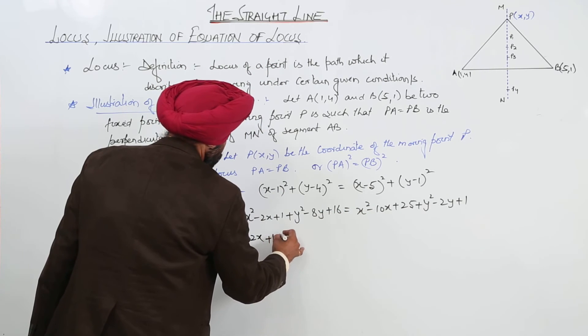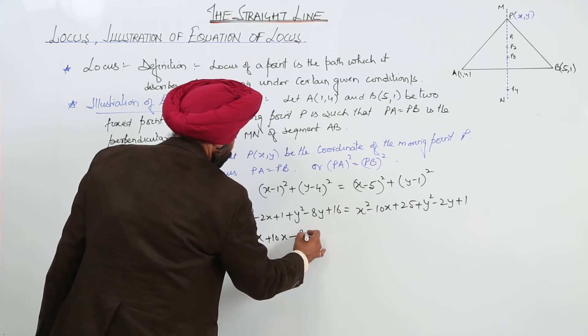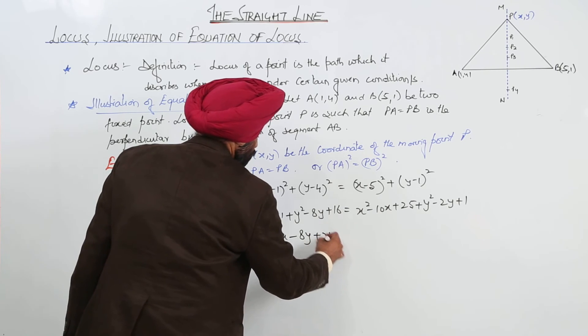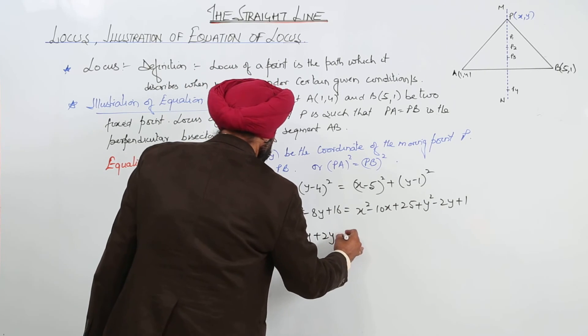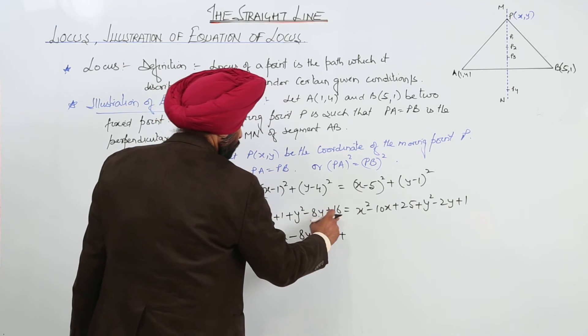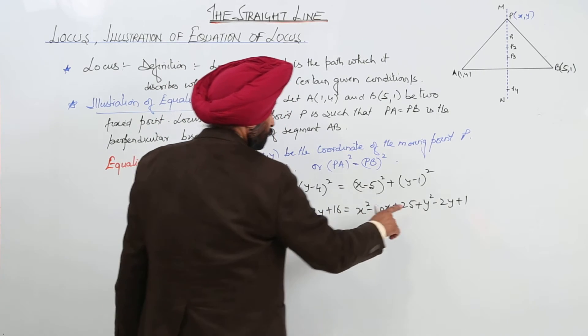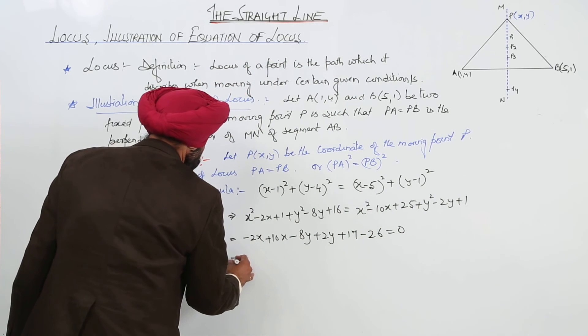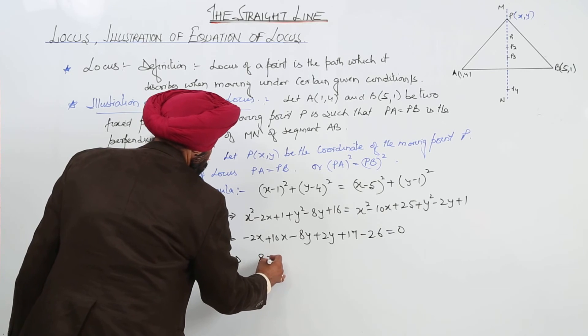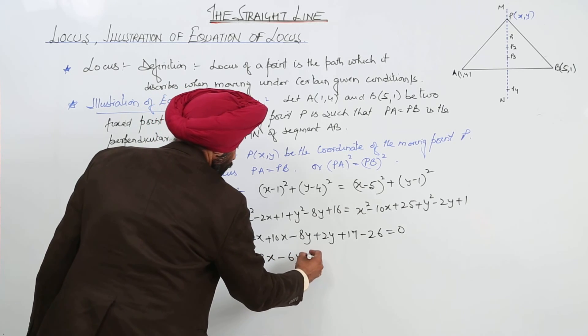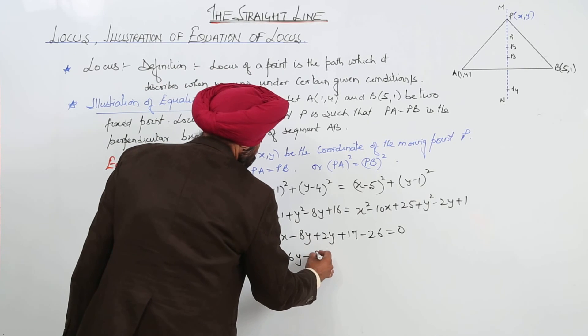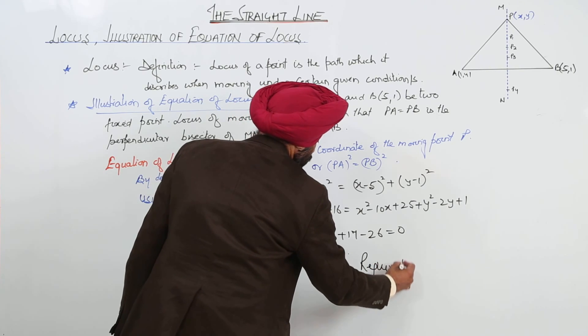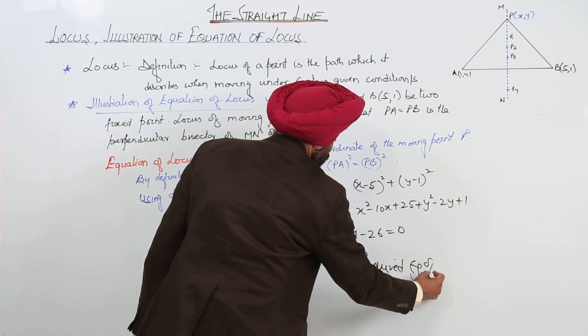We are left with negative of 2X and then here it is negative of 10X, positive of 10X, negative of 8Y, from here we are having positive of 2Y plus 1 plus 16, that is 17, negative of 25 plus 1 is 26, is equal to 0. So, 8X minus 6Y minus 9 is equal to 0, is the required equation of locus.